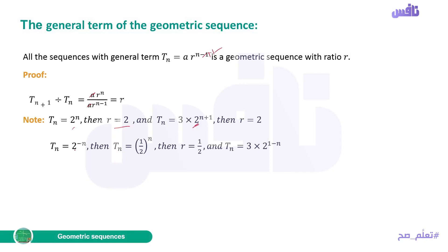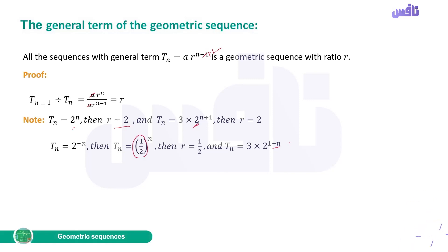When you have 2^(−n), the negative exponent means you flip the base: 2 becomes 1/2. So Tn = (1/2)^n, meaning R = 1/2. Similarly, Tn = 3 · 2^(1−n): take the negative outside — the exponent 1−n becomes n−1 negative flipped, giving 3 · (1/2)^(n−1) form, so R = 1/2. Only the general term of an exponential function can be a geometric sequence.